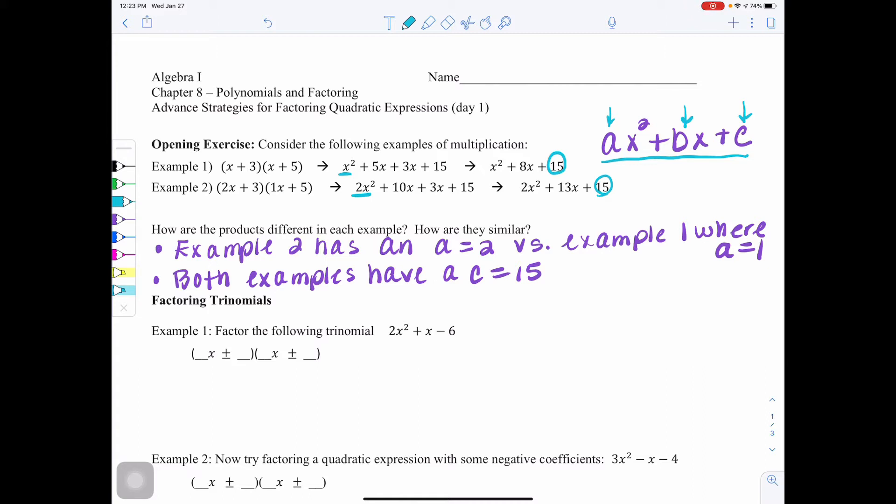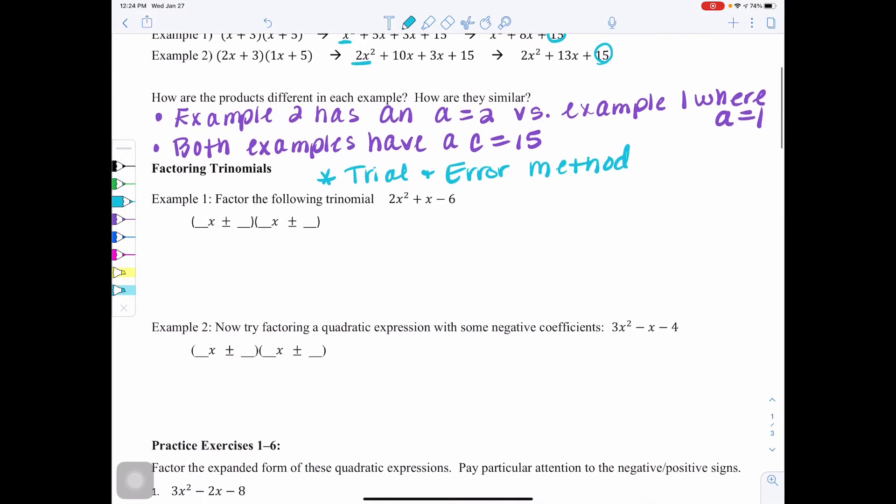So we're going to learn two methods in order to be able to factor these types of trinomials. Today is going to be the trial and error method. So when looking at example 1, they would like us to factor the following trinomial, 2x squared plus x minus 6.